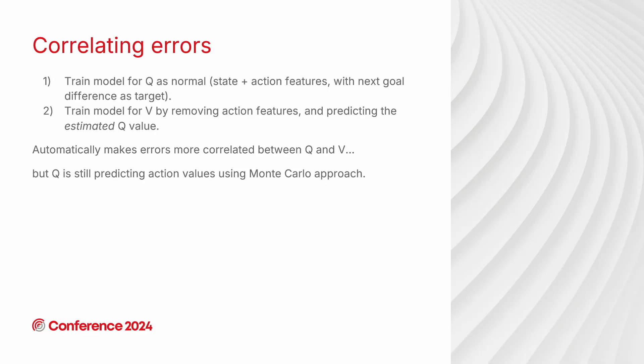A way to do that that I sort of came up with was you train a model for the value after the action as you normally would. So you have whatever possession value target you want to use and in that model you include features about the state and the action that's performed. In the simplest case that would just be the start and end location of the action but you can obviously add other things to it. And then the way you correlate the errors is you remove those features about the end location or the action that's taken place and then rather than training the second model on the same possession value target you train it on the output of that previous model. So that means that any errors that you built up in the first stage kind of get carried over to the second model and correlate the errors a bit more.